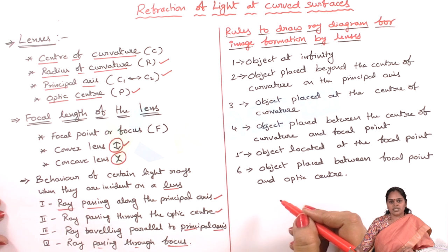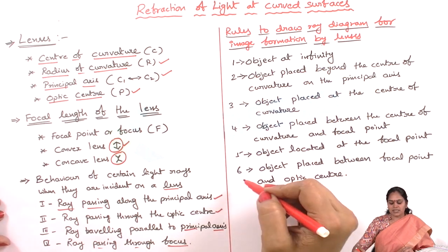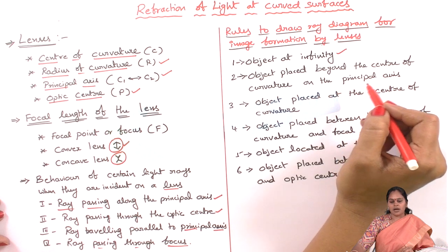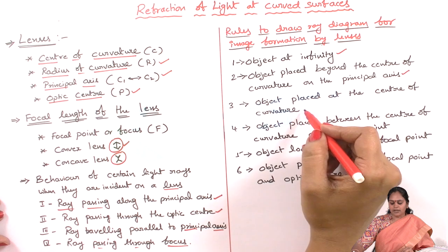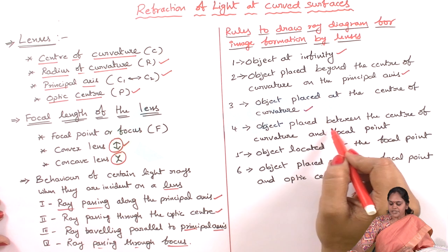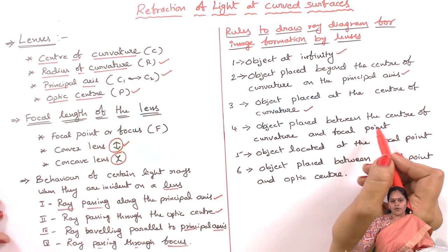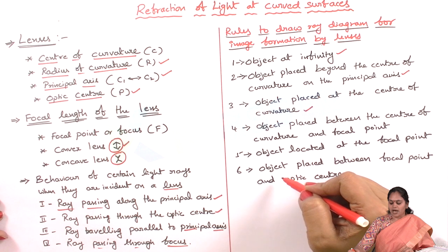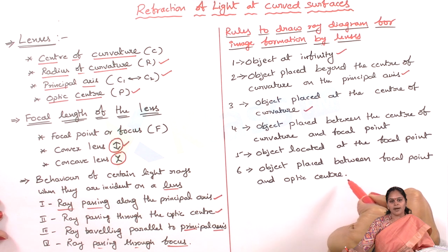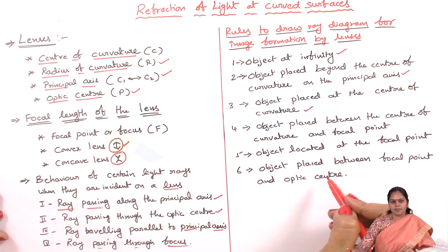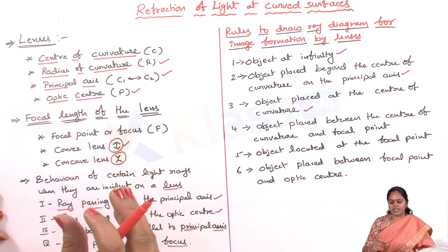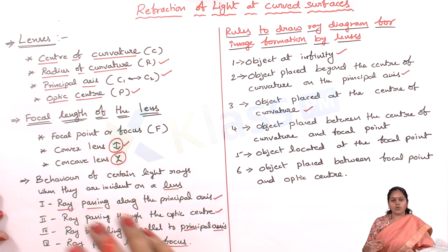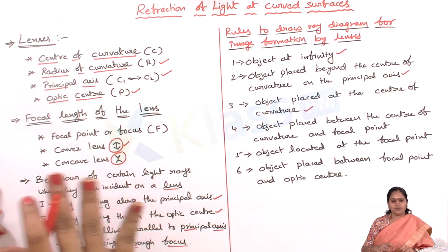For the rules to draw a ray diagram for image formation by lenses, there are six different situations based on where the object is placed: object at infinity, object placed beyond the center of curvature on the principal axis, object placed at the center of curvature, object placed between the center of curvature and focal point, object located at the focal point, and object placed between the focal point and optic center. Based on where the object is situated, the image formation will differ.